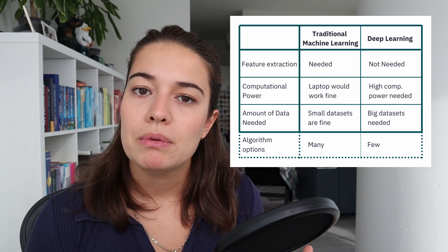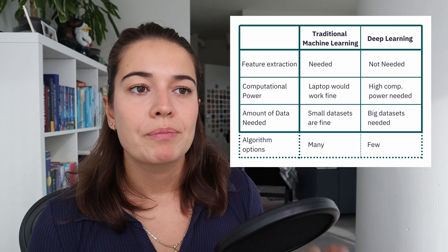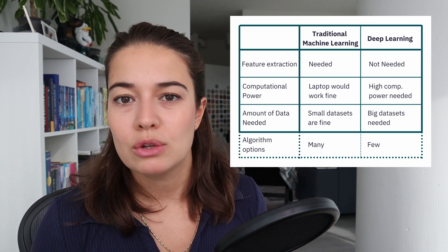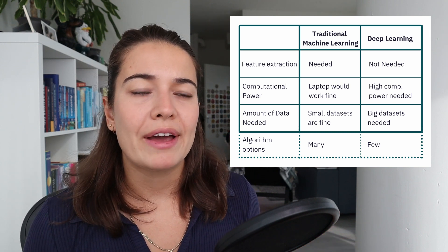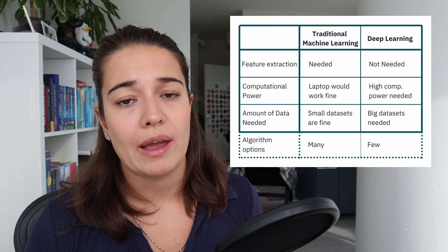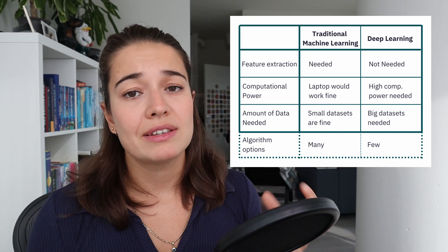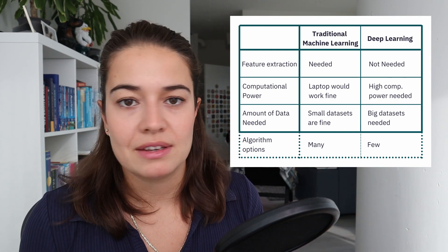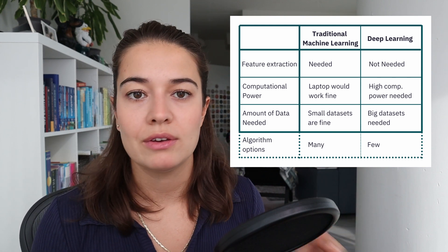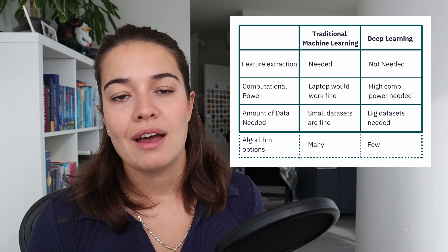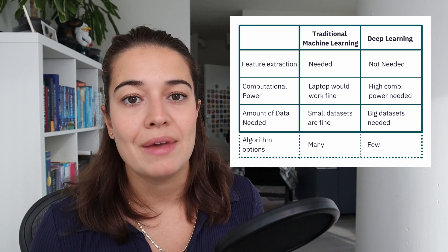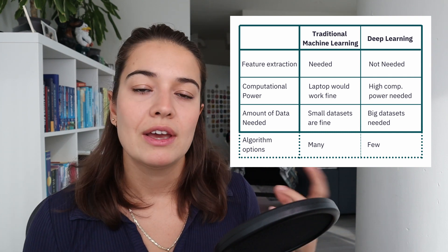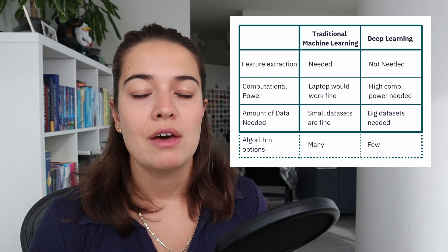One other difference people mention is that traditional machine learning gives you a lot of algorithm options to try. I partially agree — there are many types of deep learning algorithms being developed every day, but in terms of accessibility you can easily set up five, six, or even ten different traditional ML algorithms on your laptop quickly, whereas setting up even one or two deep learning models takes much longer. So in terms of feasibility, traditional machine learning does give you more options to try.